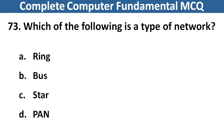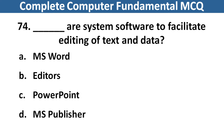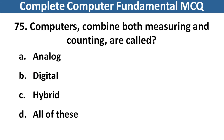Which of the following is a type of network? Right answer is option D, PAN. Next question: Dash dash is system software to facilitate editing of text and data. Right answer is option B, Editor. Next question: Computers that combine both measuring and counting are called? Right answer is option C, Hybrid.